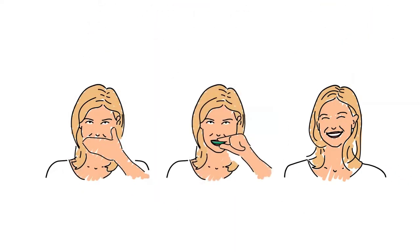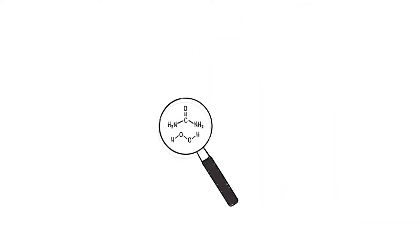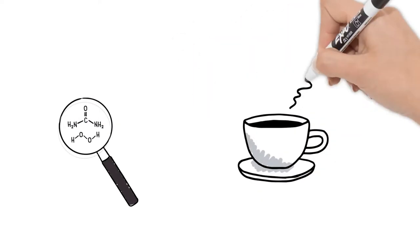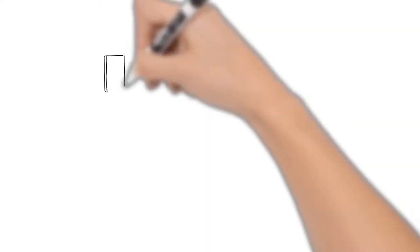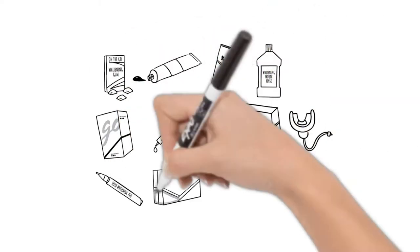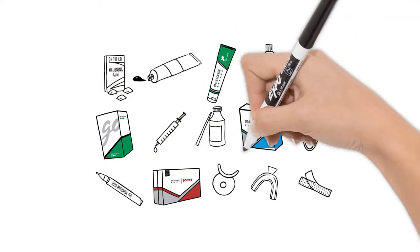But how does teeth whitening work? Why do teeth stain and discolor in the first place? Why are there so many different teeth whitening products? And why should you trust Opalescence whitening with your smile?